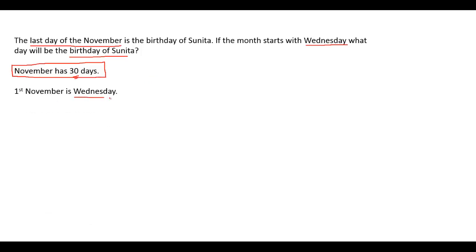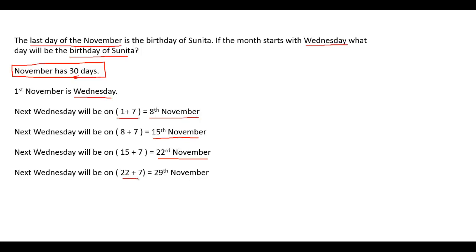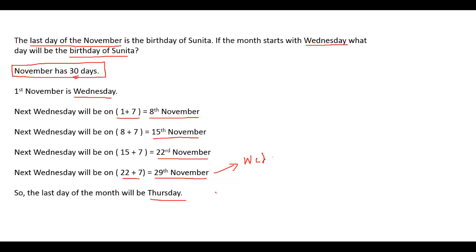1st November is Wednesday. The next Wednesday will be after 7 days — that is 8th November. Then 15th November will be the next Wednesday, then 22nd November, and then 29th November will also be a Wednesday. Since November has 30 days, the 30th day is one day after Wednesday, which is Thursday. So the last day of November is Thursday, and therefore Sunita's birthday is on Thursday.